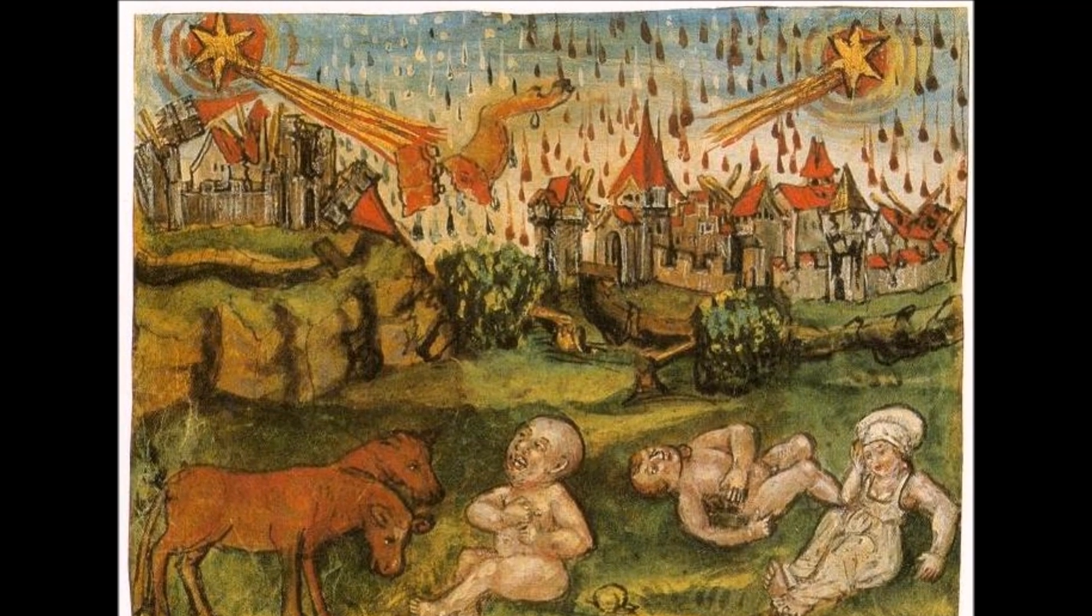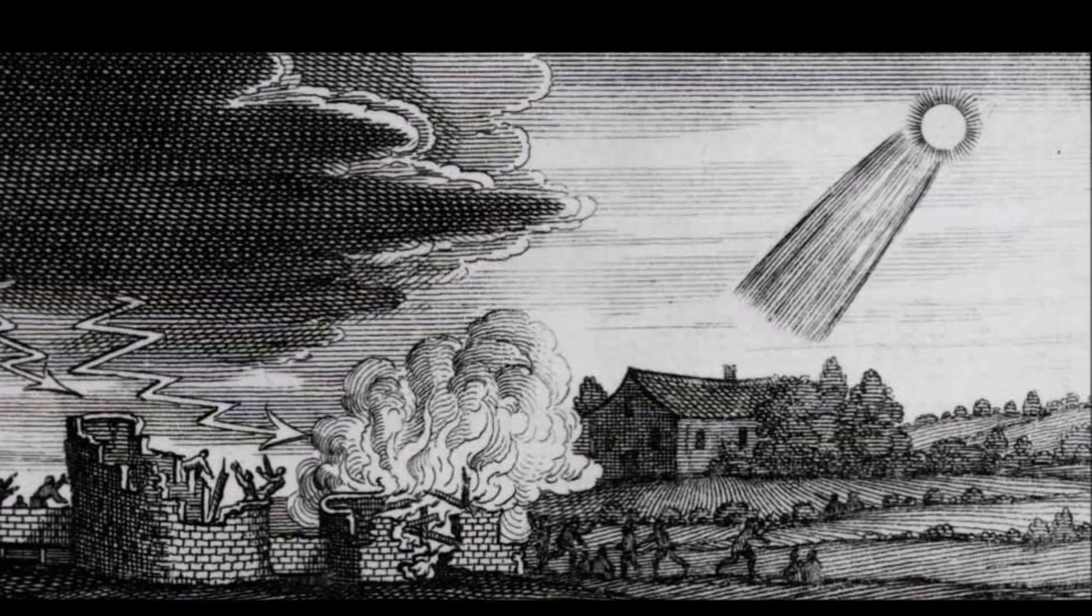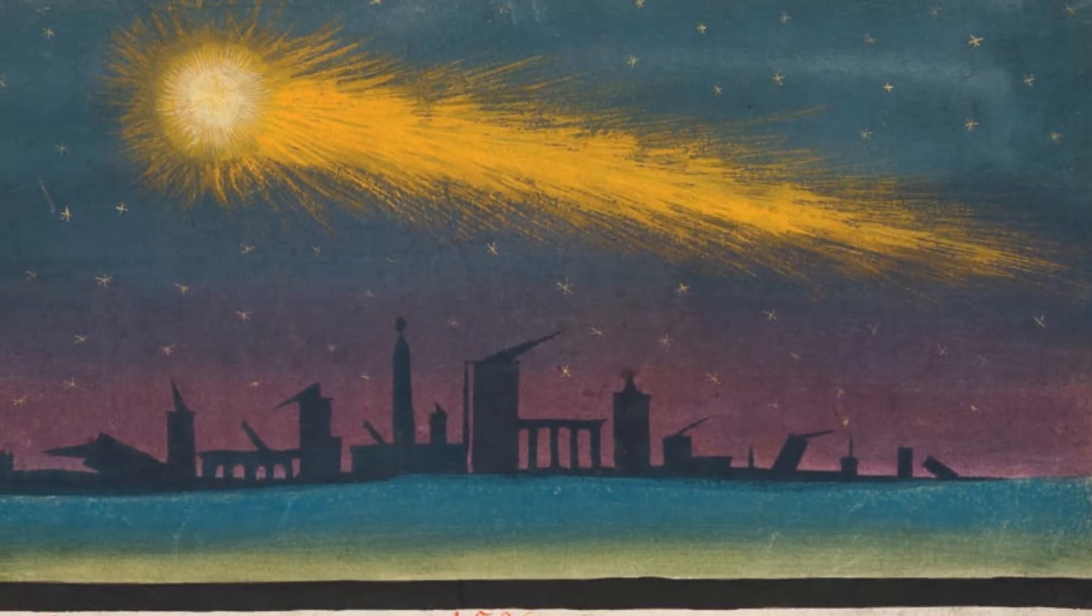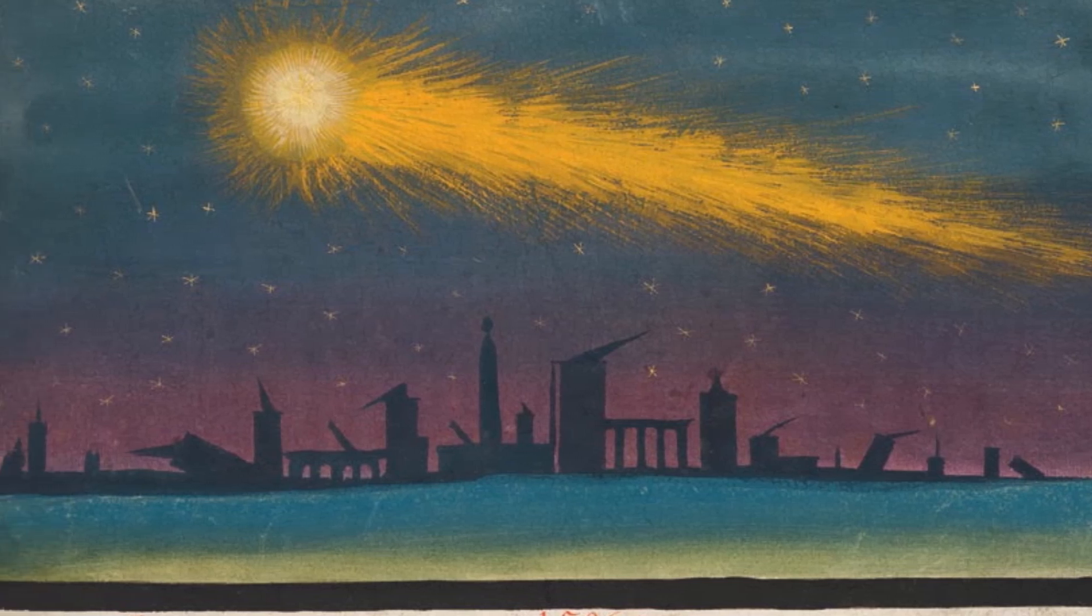Comets were thought to be fireballs, or hairy stars, traveling through the upper atmosphere. That is where they got their name. The word comet comes from a Greek word meaning wearing long hair, referring to their long, bright tails.